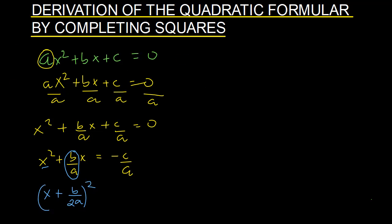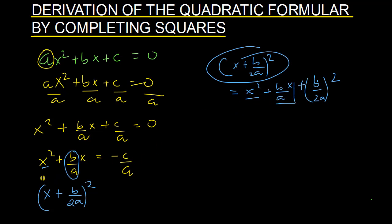Now as you can see, if you look at this term, if I expand (x + b/2a)², I'll have x² + (b/a)x + b²/4a². Or I could just write this as (b/2a)². So by expanding this, I actually get this x² and (b/a)x. So I have these terms here.